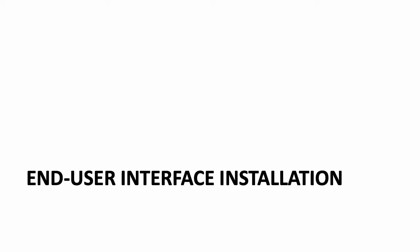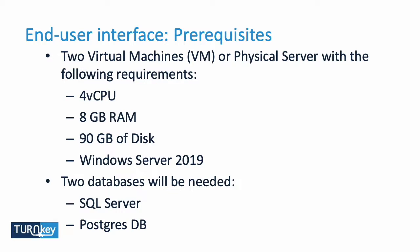The last part to install is the end user interface — the one that displays the values. You need two virtual machines, or physical servers if preferred. One is for the geographical part and the other is for the data part. The system runs on Windows. You need two databases: a SQL Server database instance and a PostgreSQL database for the geographical data.